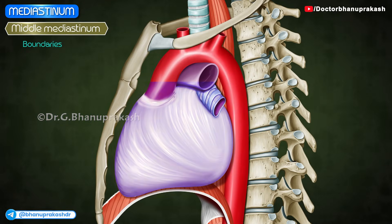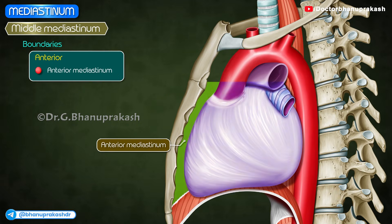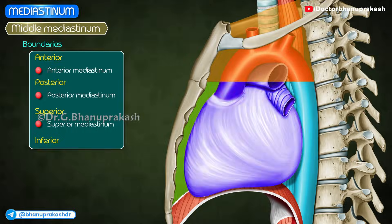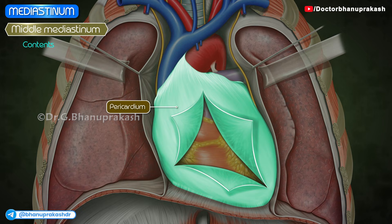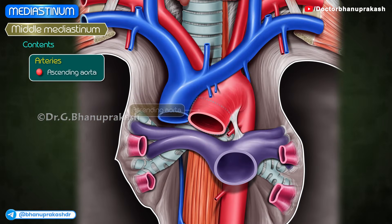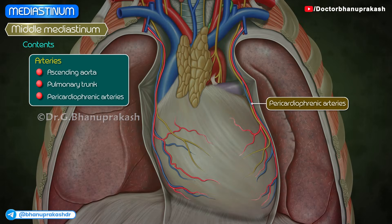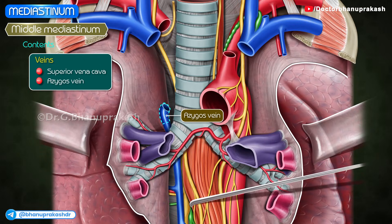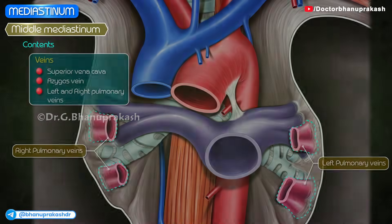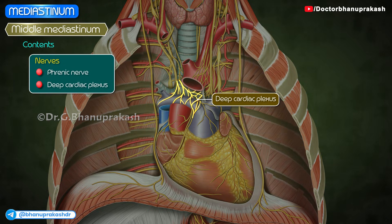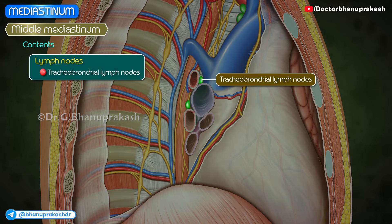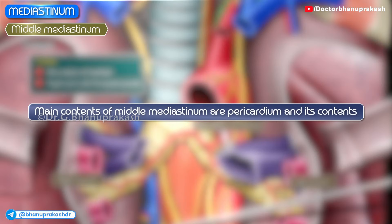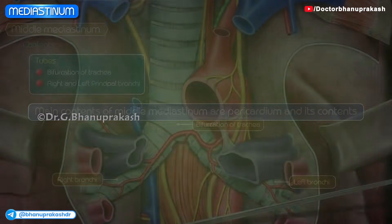Middle mediastinum — boundaries: anteriorly by the anterior mediastinum, posteriorly by the posterior mediastinum, superiorly by the superior mediastinum, and inferiorly by the diaphragm. Contents: the heart, pericardium. Arteries: the ascending aorta, pulmonary trunk dividing into two pulmonary arteries, and pericardiophrenic arteries. Veins: the lower half of the superior vena cava, the terminal part of the azygous vein, and the right and left pulmonary veins. Nerves: phrenic nerves and the deep cardiac plexus. Tracheobronchial lymph nodes. Tubes: the bifurcation of the trachea and the right and left principal bronchi. Note: the main contents of the middle mediastinum are the pericardium and its contents.